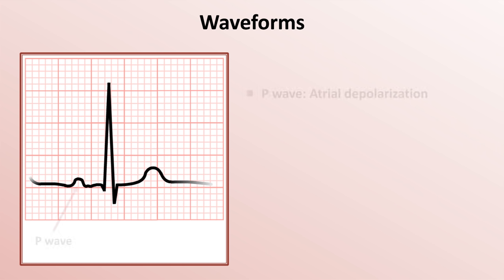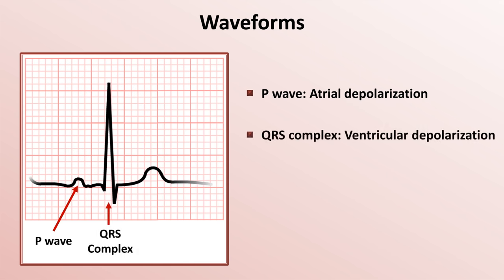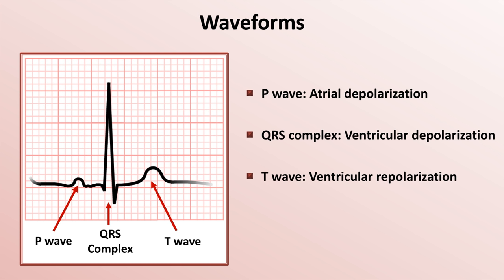The first waveform is called the P-wave, which represents atrial depolarization. The tall, sharp spike is called the QRS complex, which represents ventricular depolarization. The third waveform is the T-wave, which represents ventricular repolarization. Finally, there is on rare occasion a fourth waveform after the T-wave, which is called the U-wave, and which is not seen in this particular example. The cause of the U-wave is not entirely known, and we'll discuss it more in a future lecture.